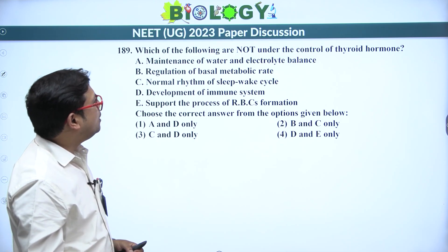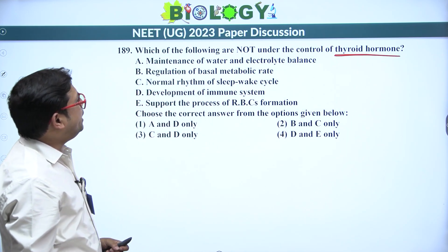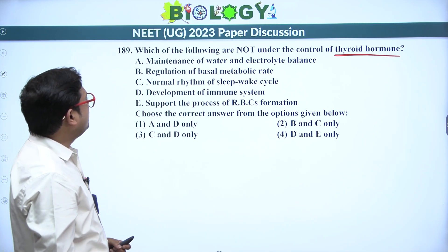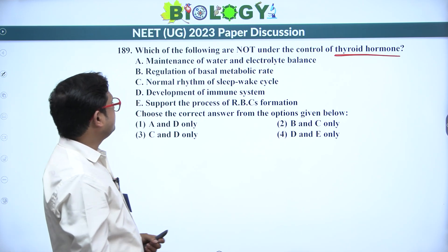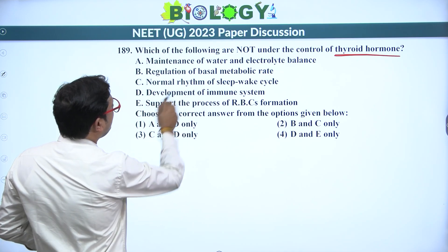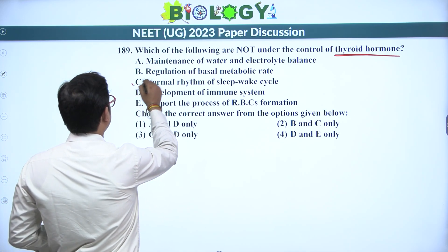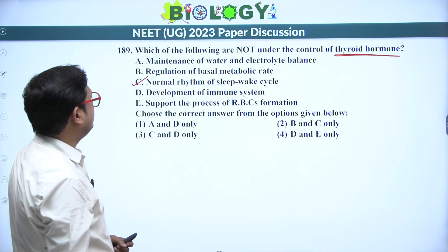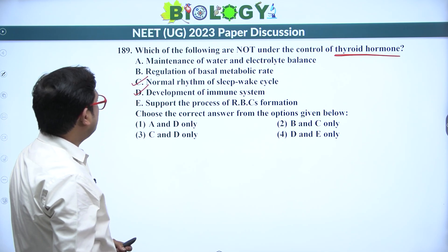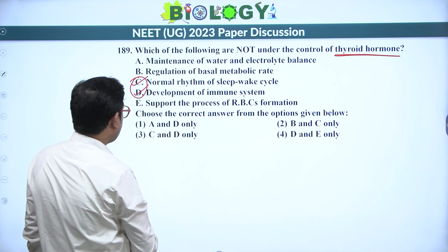Next: which are not under the control of thyroid hormone? Maintenance of water and electrolyte balance — thyroid controls this. Regulation of basal metabolic rate — thyroid controls this. Normal rhythm of sleep-wake cycle — this is melatonin, not thyroid. Development of immune system — this is thymosin from the thymus gland, not thyroid. So C and D are not under thyroid control — answer is 3.